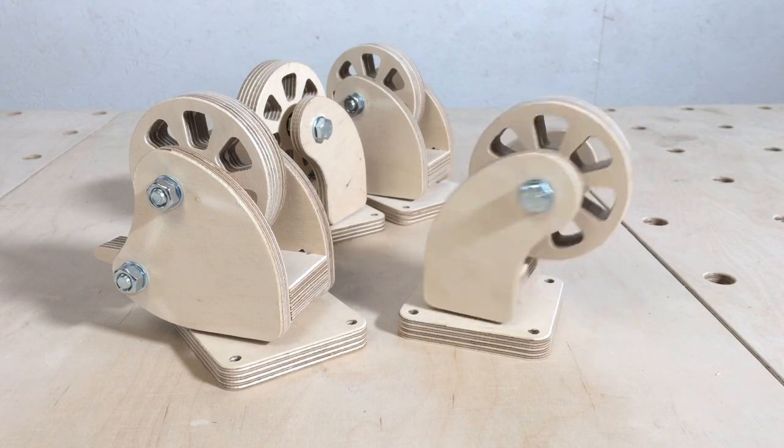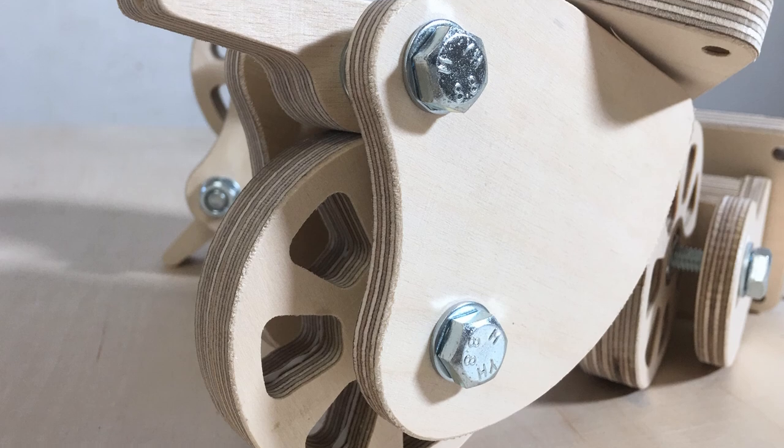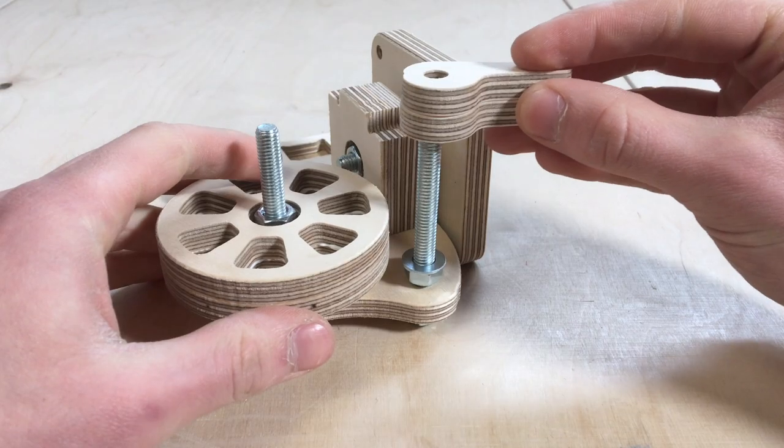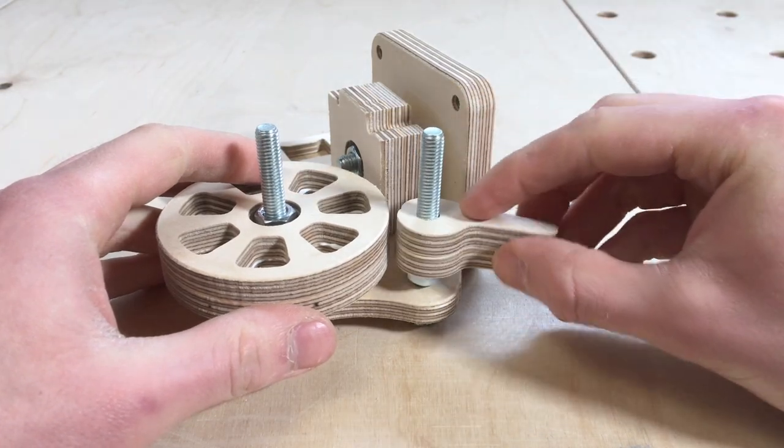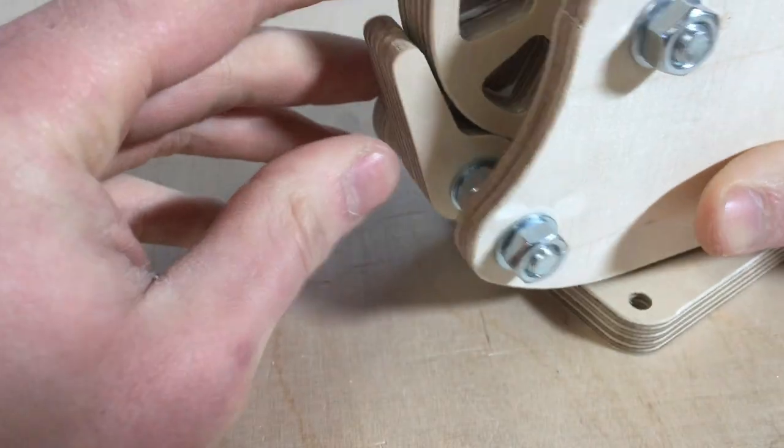One of the new casters was the same as we built before and the other two had brakes. The brake option is more or less the same. It just has another screw between the side components that holds the brakes. For the brakes I used the same mechanism that is used for the cam clamps.